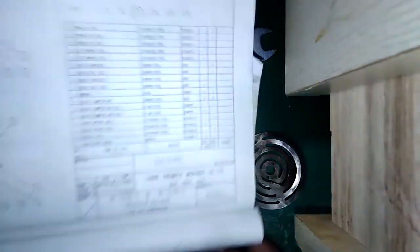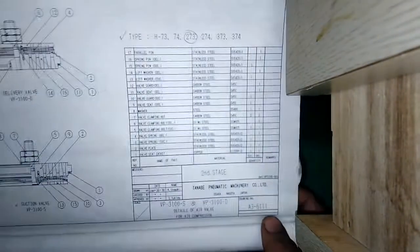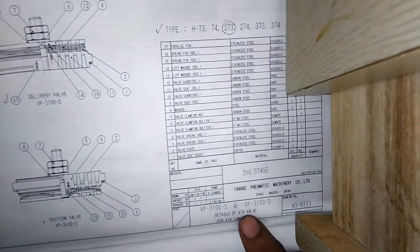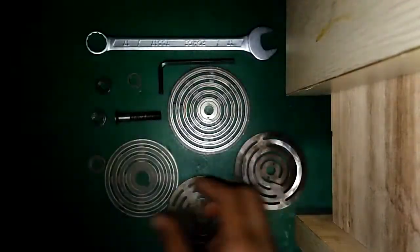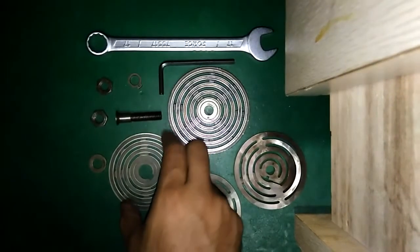It will be in the compressor already with the previously installed valve. Number two is the wall plate. This is the wall plate.